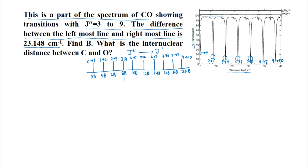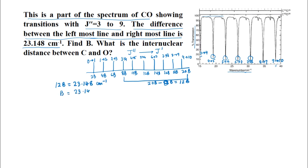In other words, the separation in wavenumbers between the leftmost line and the rightmost line is 20B minus 8B, which is 12B. According to the problem, this difference is 23.148 cm⁻¹. Thus we can write 12B = 23.148, giving B = 23.148 divided by 12, that is 1.929 cm⁻¹. So we have found B = 1.929 cm⁻¹.